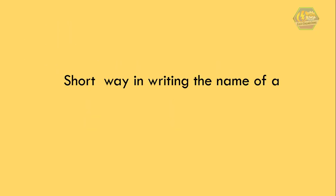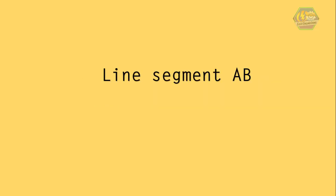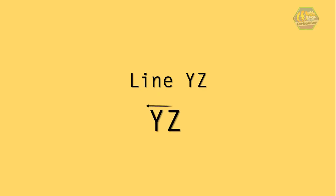And in geometry there is a shorthand way of writing the name of a line, line segment, and ray. So instead of writing line segment AB, we could just write AB and put a line on top of AB. Instead of writing line YZ, we could just write YZ with two arrowheads over them. And instead of writing ray BC, we could just write BC with one arrowhead on top of it.